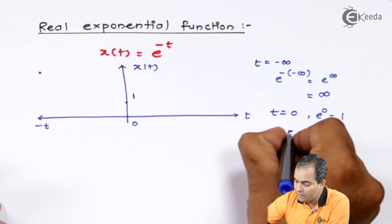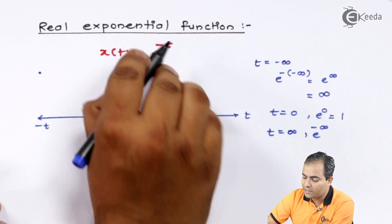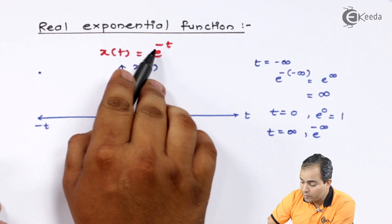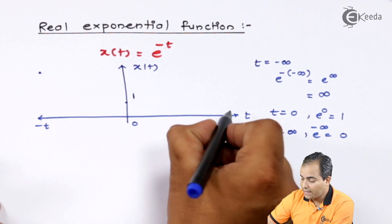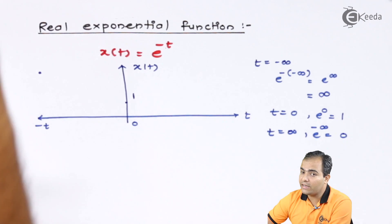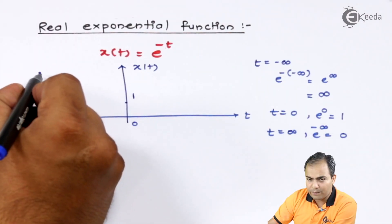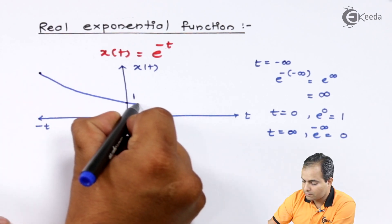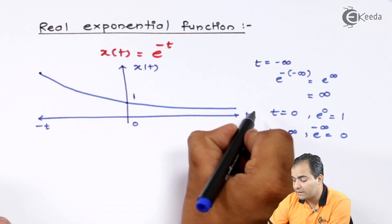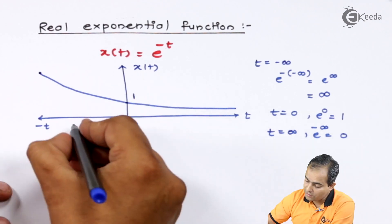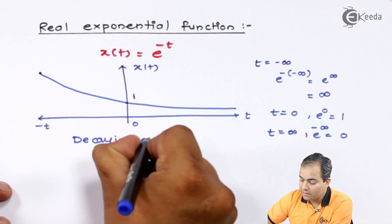Now we will substitute t equals to positive infinity. If I substitute t equals to infinity, this becomes e to the power minus infinity, and we know that e to the power minus infinity is 0. So at the right extreme position the amplitude becomes 0. Connecting these points, the graph exponentially decreases, so this graph is called a decaying exponential.